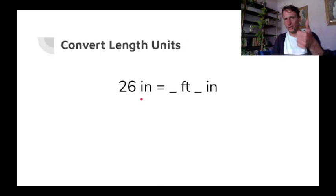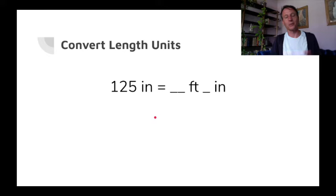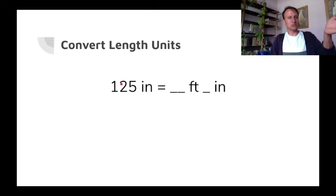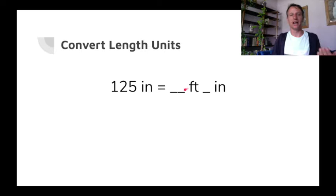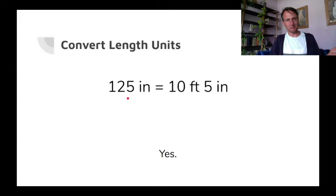Divide 26 by 12: 12, 24 — so there are two feet in there with two inches left over. Very good. And here's one where it looks tough but you can actually do it in your head. 125 divided by 12: 12 times 10 is 120, so 10 feet and how many inches left over? Five. Because 12 times 10 is 120, and five more. Great.